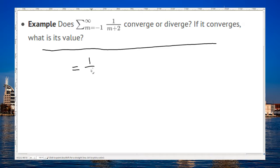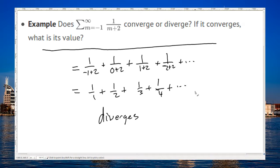If I plug it in, I get 1 over negative 1 plus 2. So, plus 1 over 0 plus 2, plus 1 over 1 plus 2, 1 over 2 plus 2. That's 1 over 1, 1 half, 1 third. We recognize this as the harmonic series. And we know that that diverges.